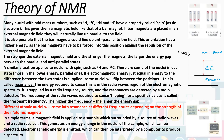Many nuclei that have odd mass numbers, such as hydrogen H1, carbon-13, nitrogen-15, fluorine-19, have a property called spin, as do electrons.